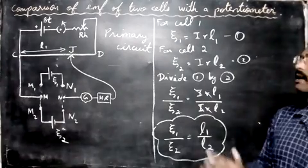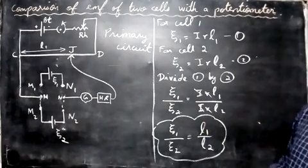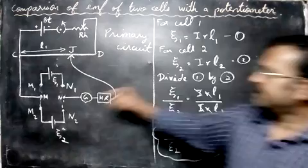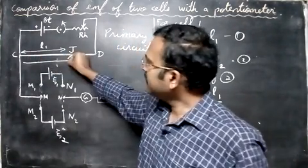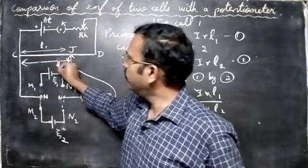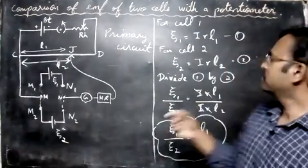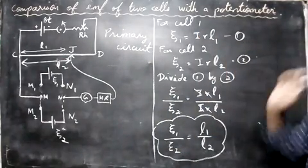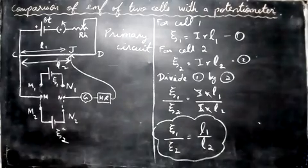When you keep the second cell, the balancing length here will be L2. It will be slightly different. So if you know the two balancing lengths, we can easily compare the EMF of the two cells.